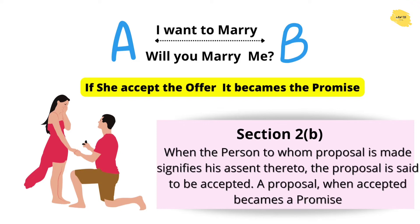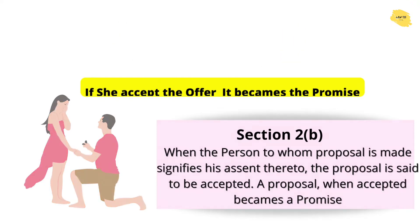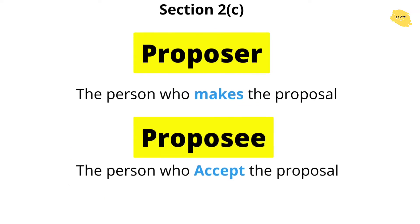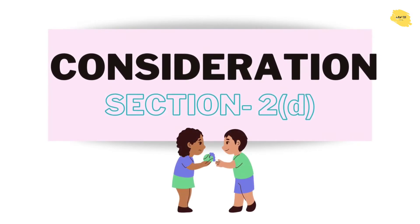When a proposal is accepted, it becomes a promise. Now comes promisor and promisee. The person who makes the proposal becomes the promisor. If the other party says yes, they become the promisee. A person who makes the proposal is the promisor; the one who accepts the proposal is the promisee. This is stated in Section 2(c).